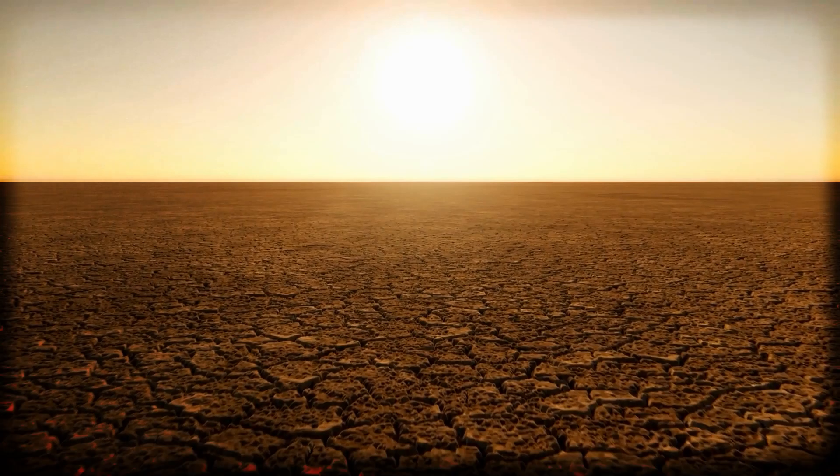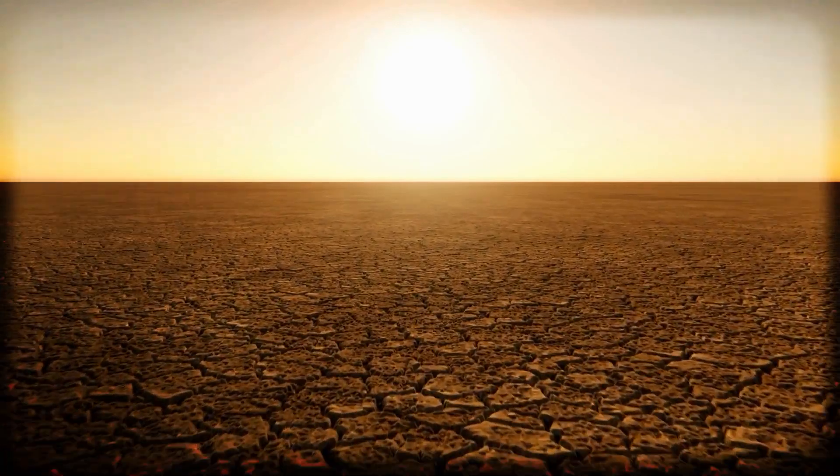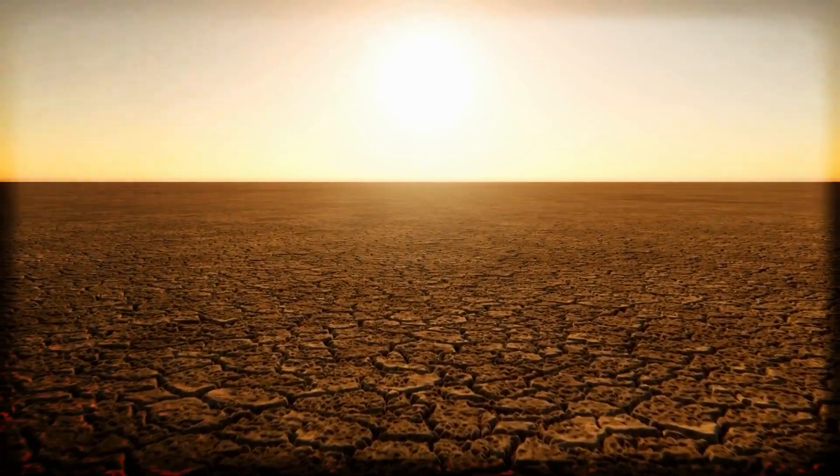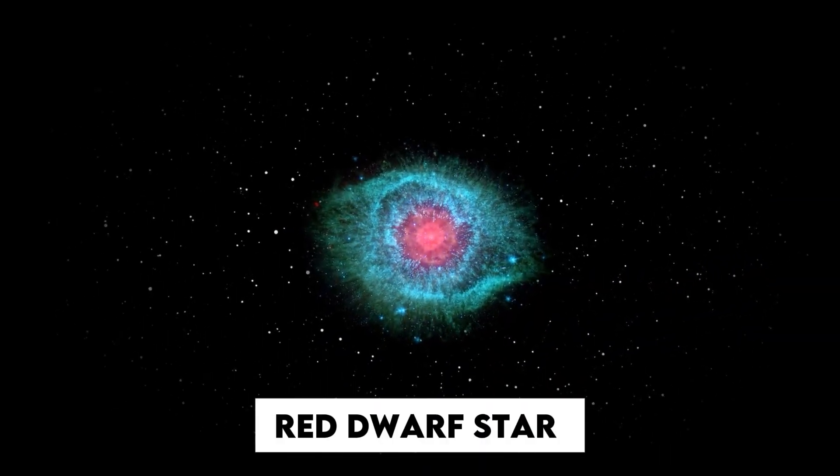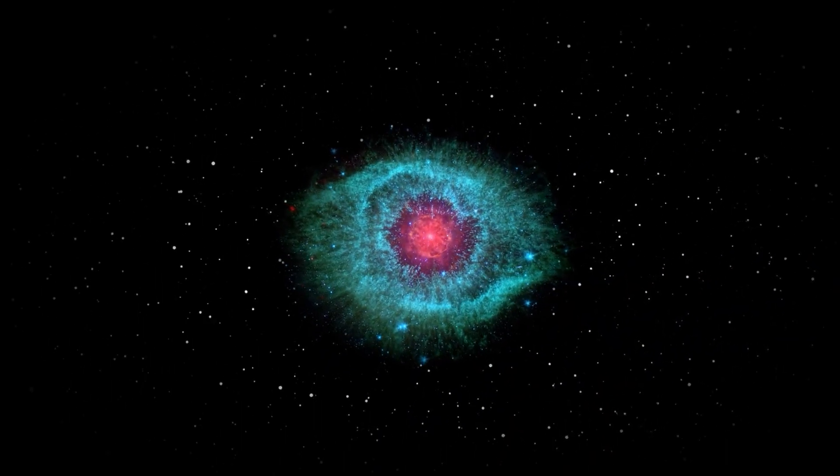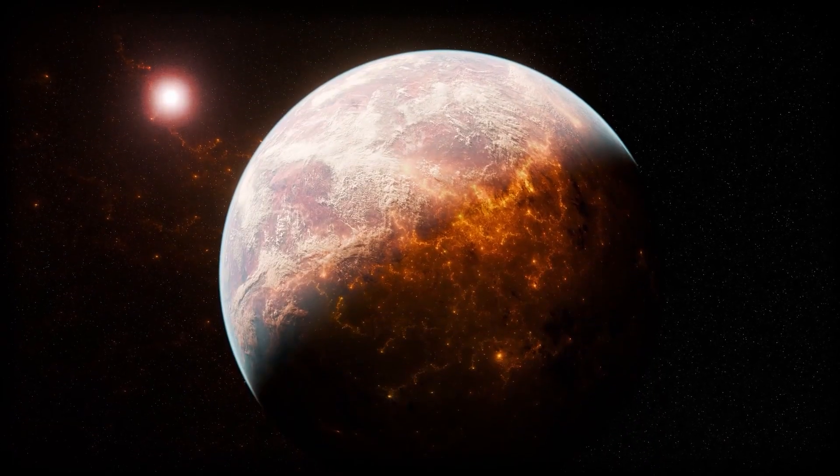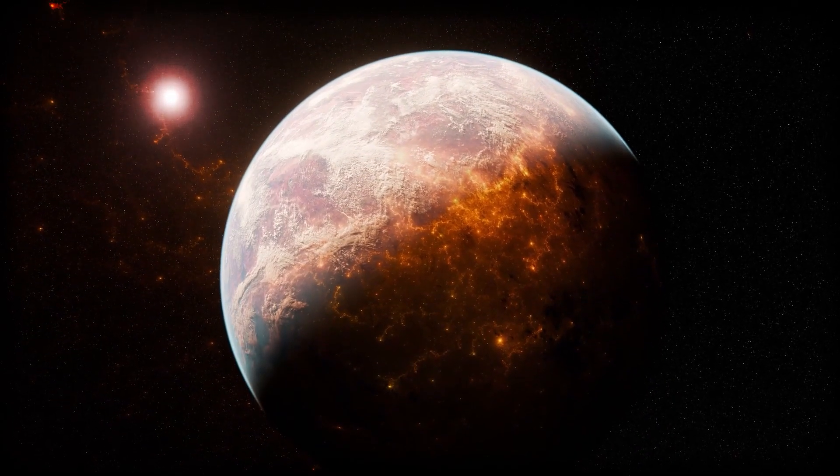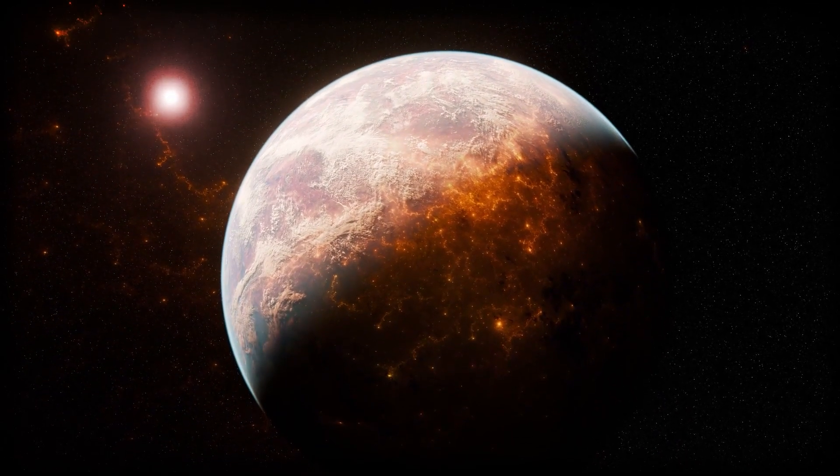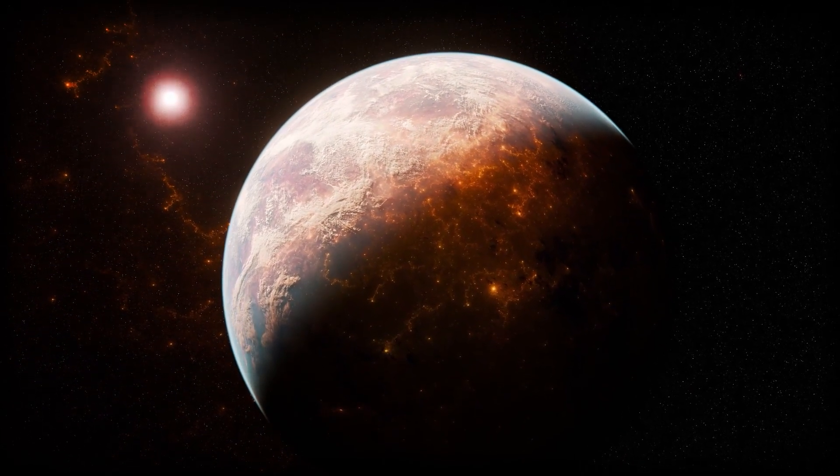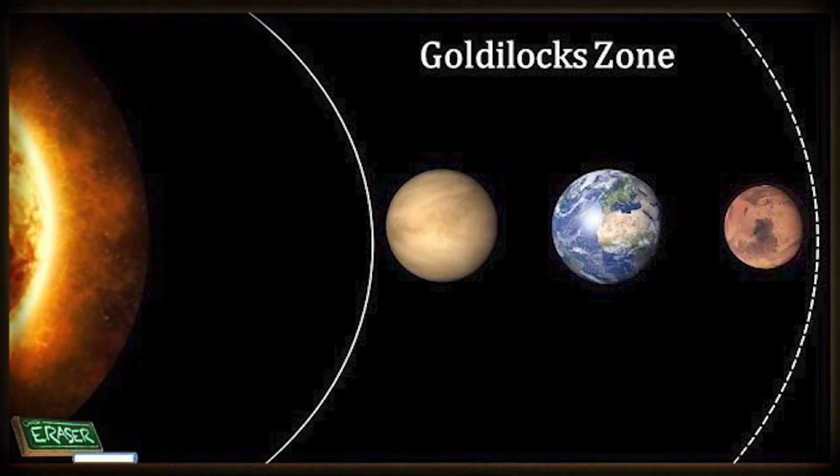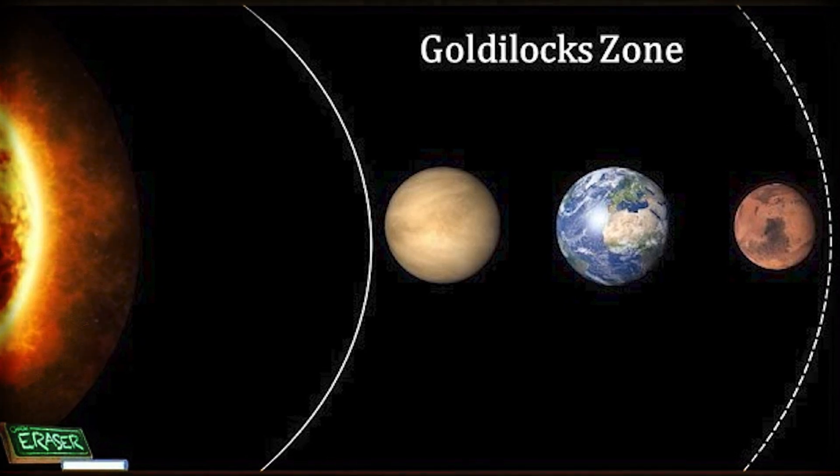That puts it in a temperature sweet spot, possibly not too hot, not too cold, making it one of the more promising Earth-like candidates we've seen. It orbits a red dwarf star, which is the most common kind in our galaxy, and this little world adds another tick to the growing list of Earth-sized planets found in the habitable zone, that Goldilocks zone where conditions might be just right for life.